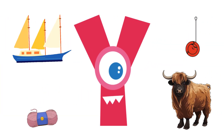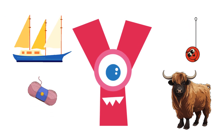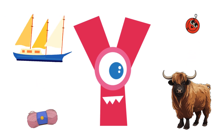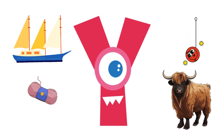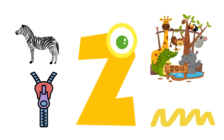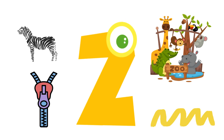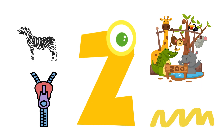Y for yak, yoke, yacht, yarn. Z for zebra, zoo, zip, zigzag.